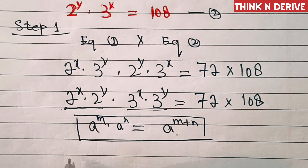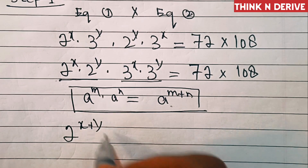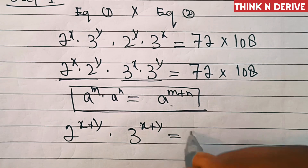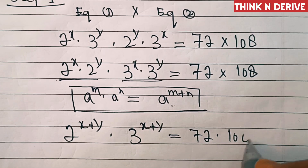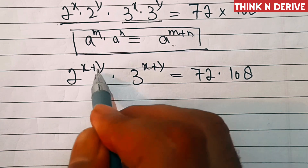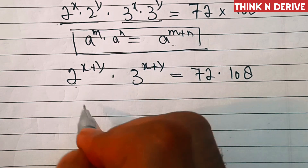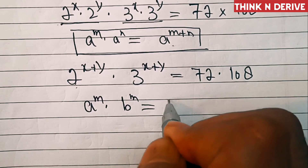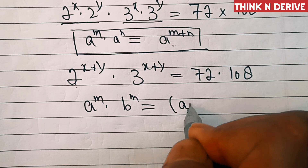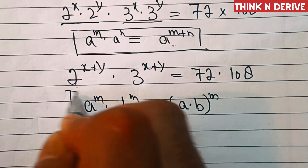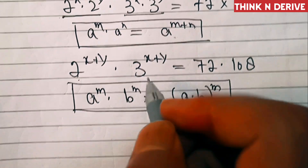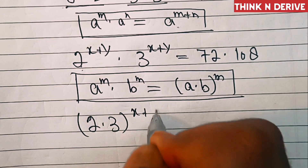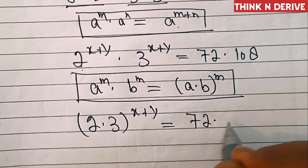So this gives us 2 power x plus y into 3 power x plus y equal to 72 into 108. Now we have different bases with the same exponent, so we apply the formula: a power m into b power m equals a into b power m. This gives us 2 times 3, all power x plus y, equal to 72 into 108.